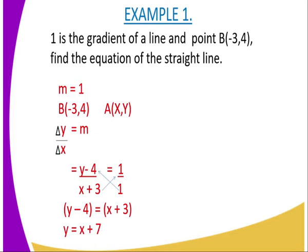By cross-multiplying, you will get (y - 4) equals (x + 3). Therefore, take the -4 to the other side so that you can get the equation of a straight line in the form y equals mx plus c. The answer becomes y equals x plus 7.